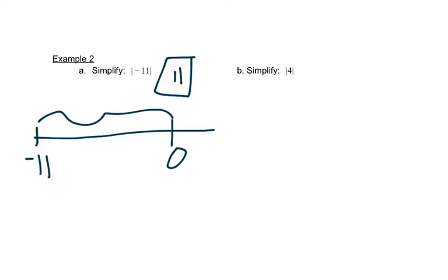It's the same idea with this part B. If this is zero and this is four, this absolute value of four is really asking, how far away is four from zero? It's four units away. The distance is four. So the absolute value of four is four. Distances are always positive.